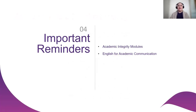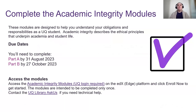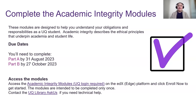Two important reminders: first, complete the Academic Integrity Modules. These are designed to help you understand your obligations and responsibilities as a UQ student, covering ethical principles that underpin academia. Part A is due 31st of August and Part B is due 27th of October. To access the modules, log in on the EdX Edge platform and click Enrol Now. The modules are intended to be completed only once. If you have technical difficulties, the UQ Library Ask Us service can help.